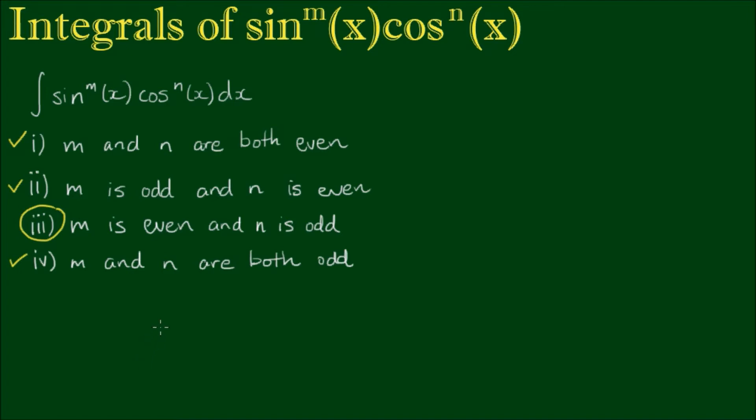So let's have a look at this one. The example we'll use is the integral of sine to the 4th power of x by cosine to the 5th power of x with respect to x. Now case number 3 is very similar to case number 2 actually.